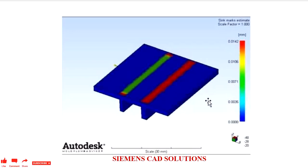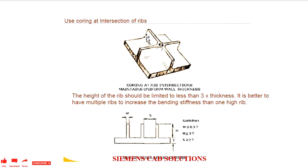In this slide, we can see the sink analysis using Autodesk. The first one, highlighted in green, shows the consideration of rib design with 0.6 nominal thickness. The red color one has uniform wall thickness applied to the rib — the same as the nominal thickness — which is the reason it has a sink issue. Whenever we have a profile with more wall thickness, we need to core out the material so that the cooling effect is uniform and the sink issue won't occur.